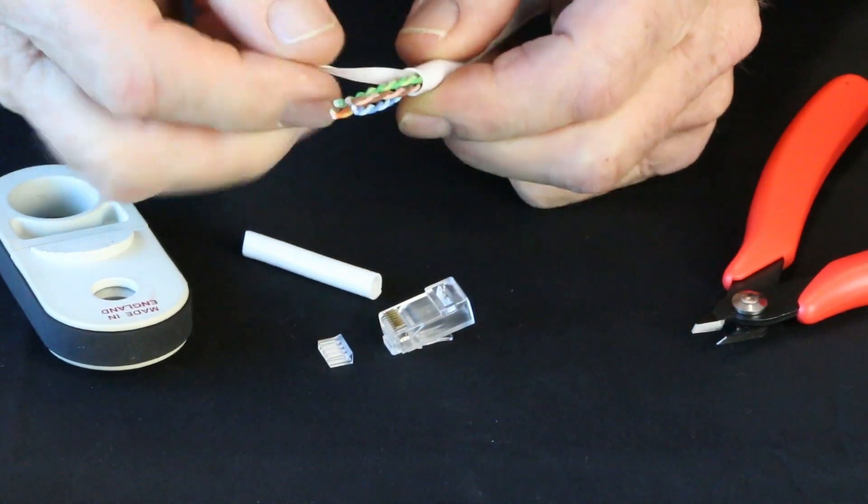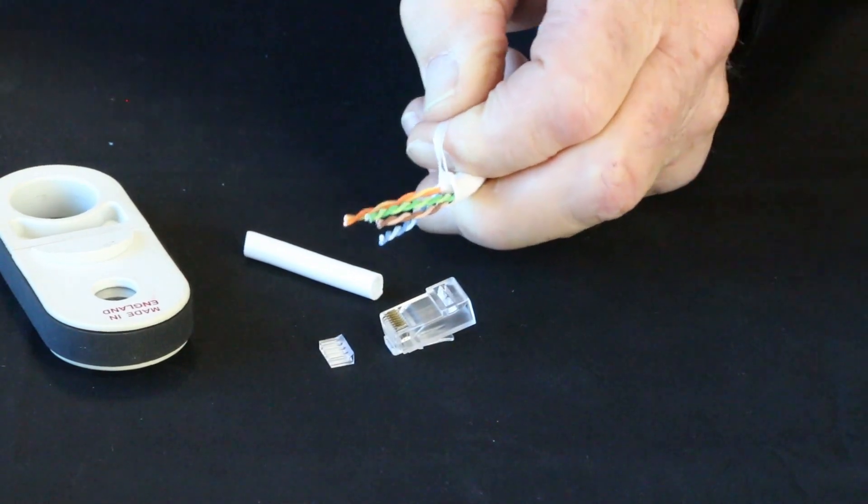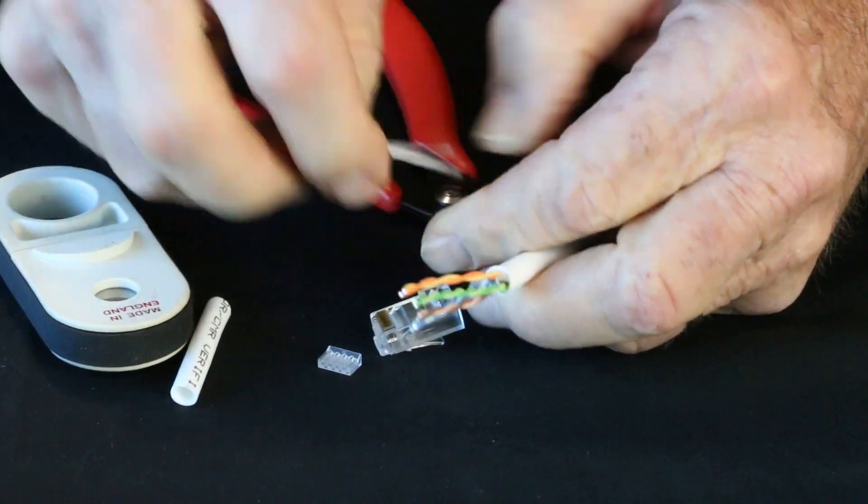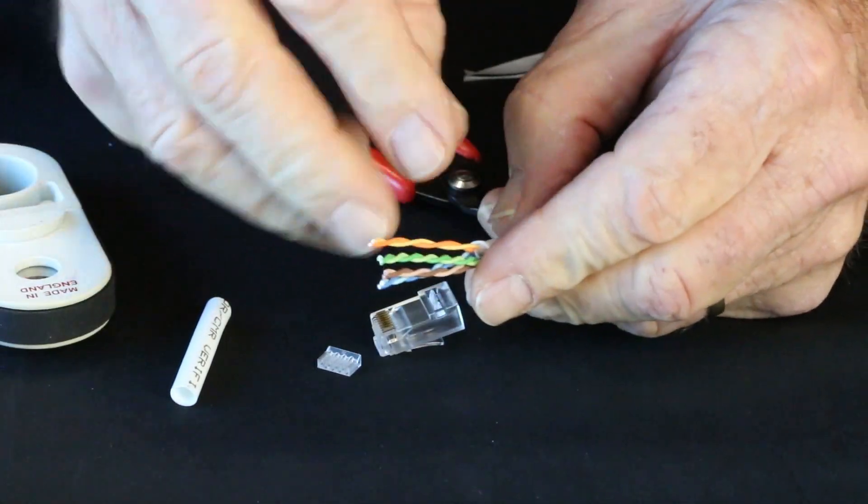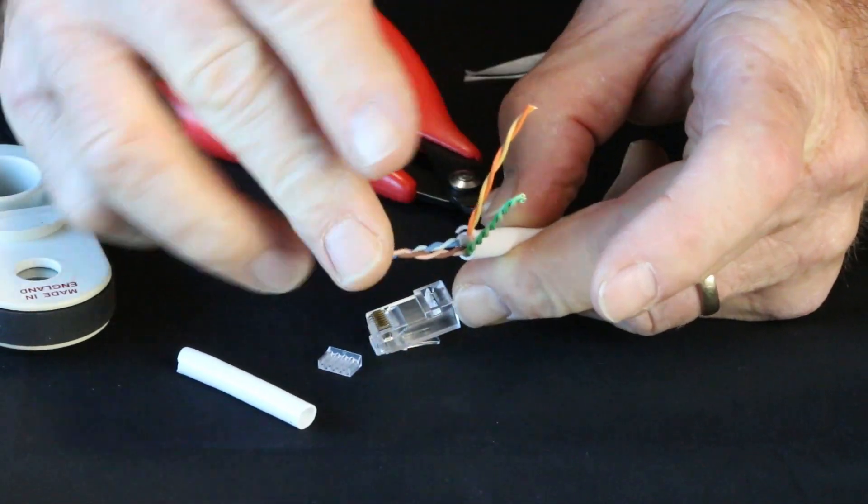Let me get rid of this here. I'm going to pull that back real tight. Take my flush cutter and remove that. And then I'm not throwing my jacket away. Remember, we always use that to separate our pairs.